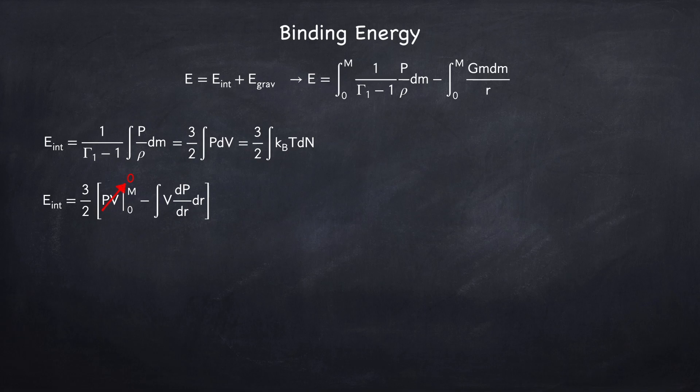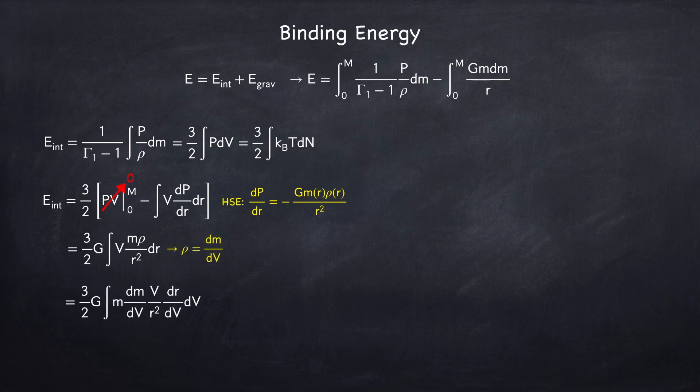In stellar physics 3a, we found the equation for hydrostatic equilibrium, which told us what dpdr is, so I can now substitute that in. And now I'm going to use the fact that rho is dmdv by definition, and substitute that in for the density. And I've also divided and multiplied by dv. So here I have dr divided by dv and then times dv.